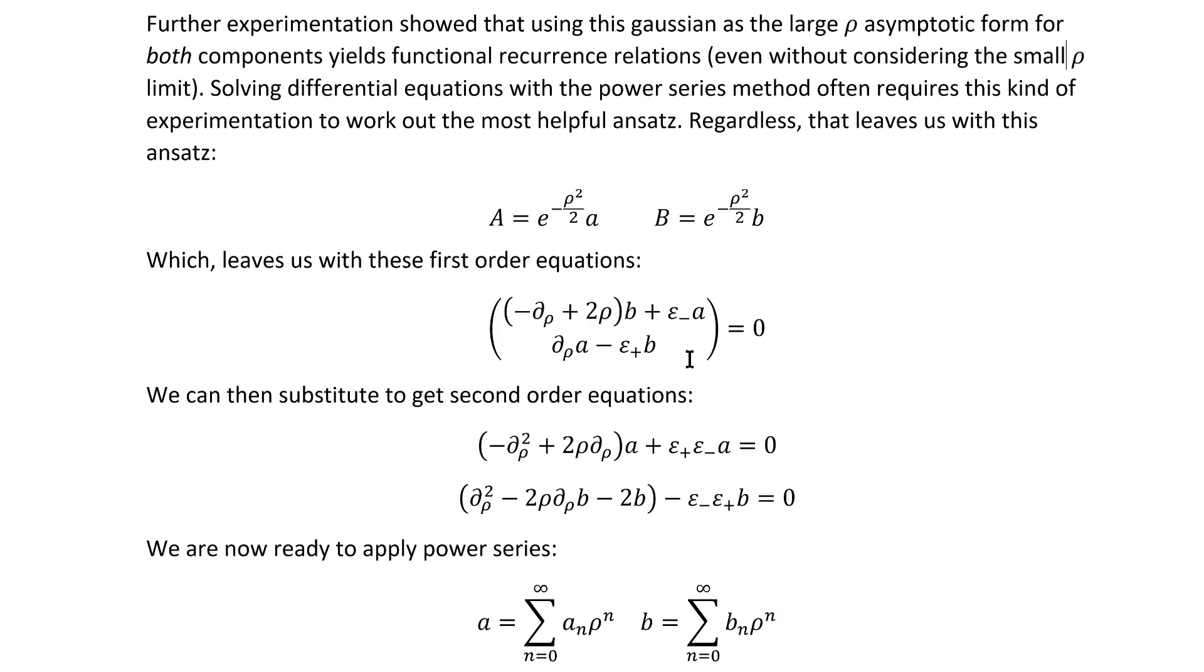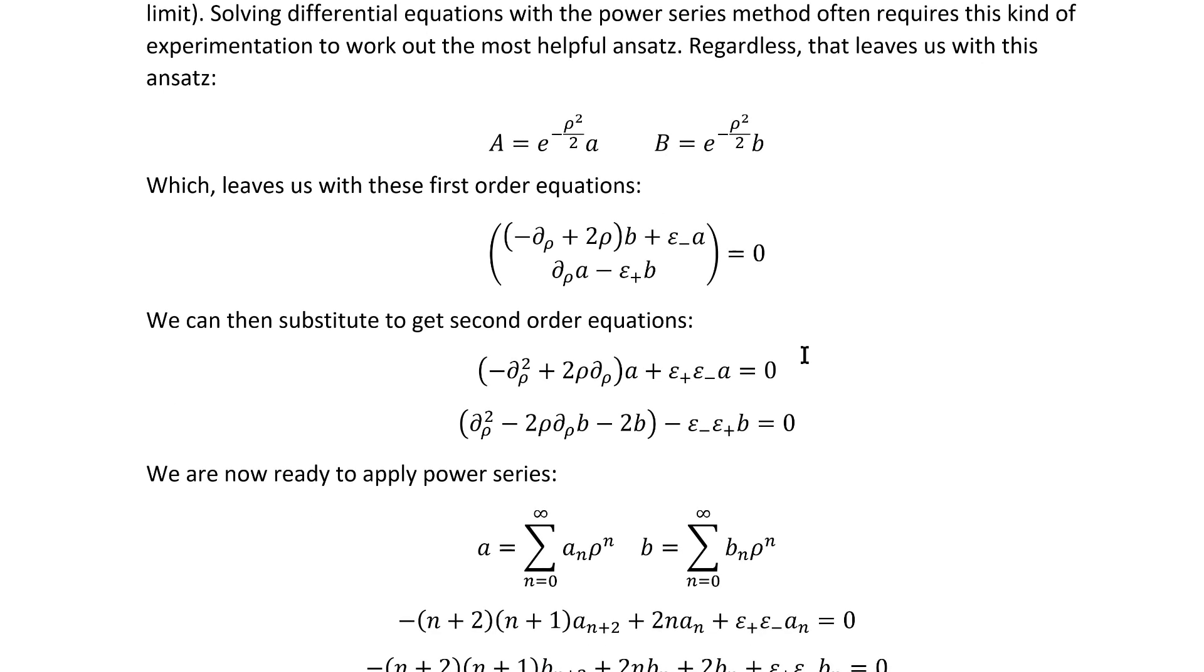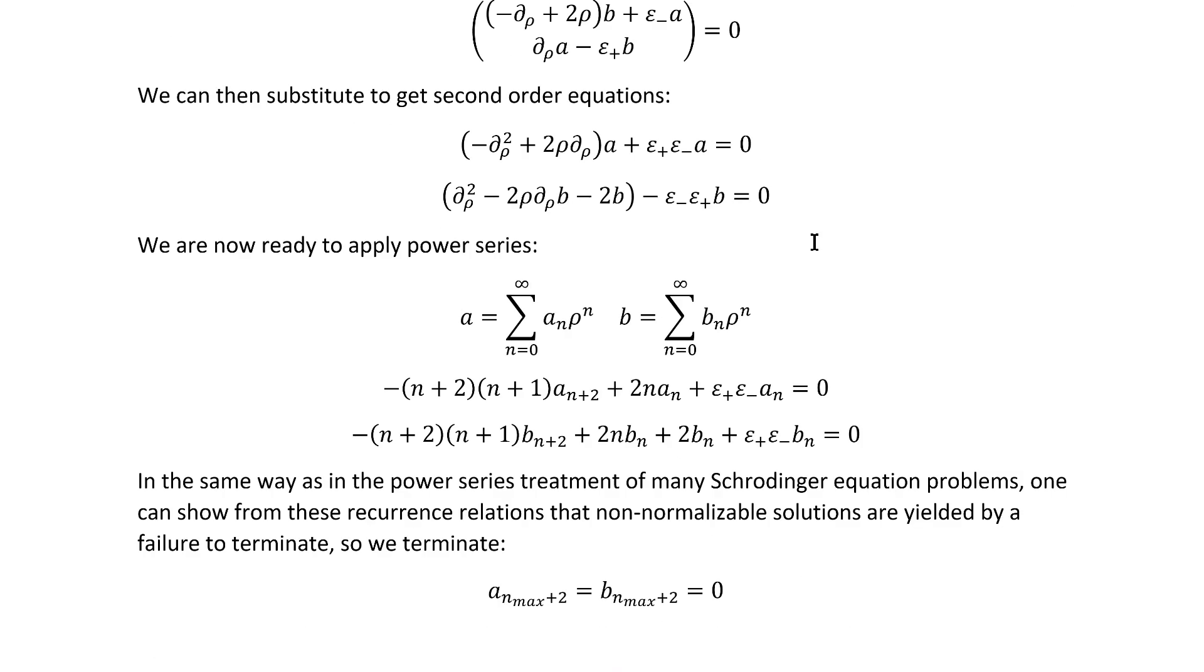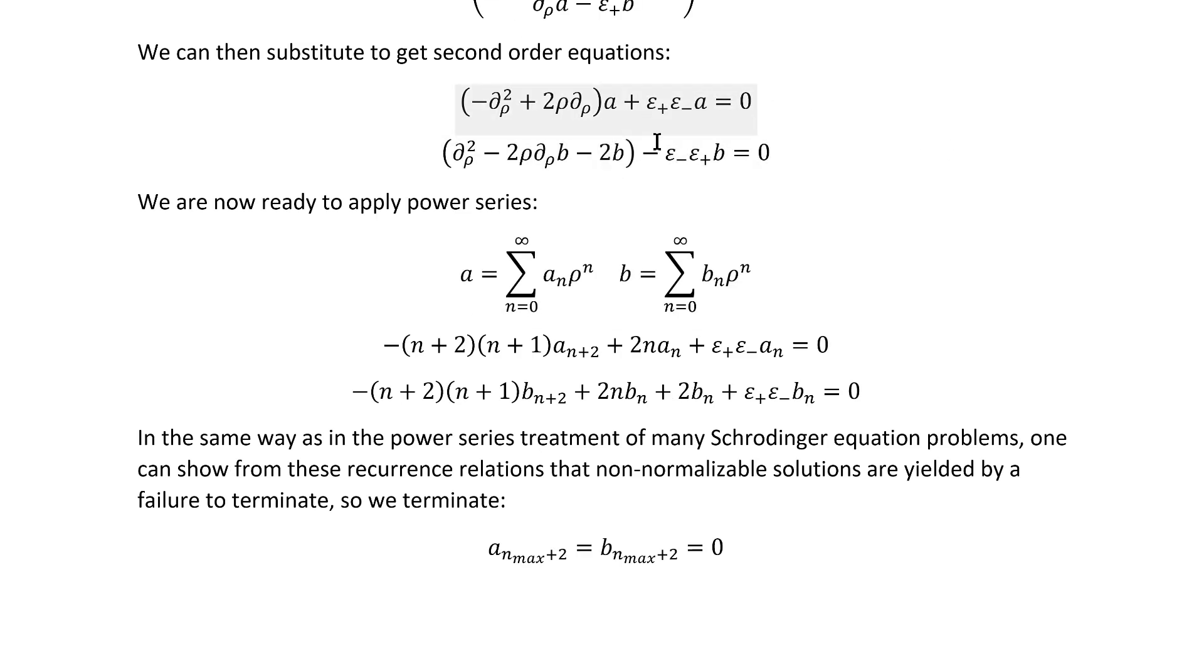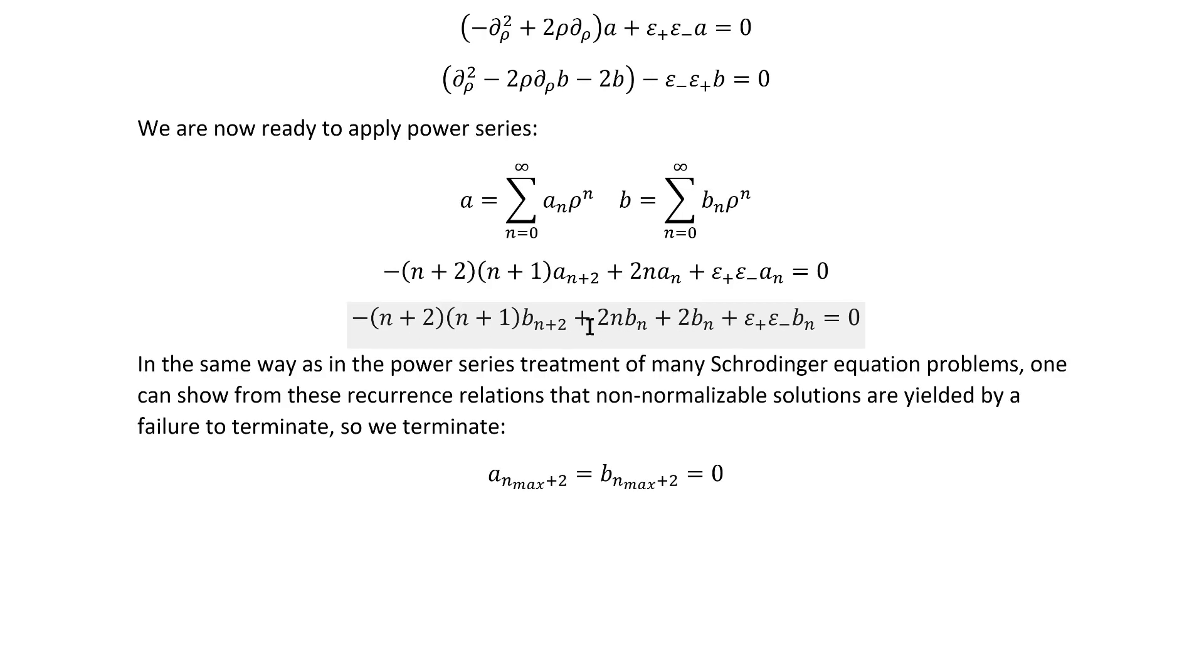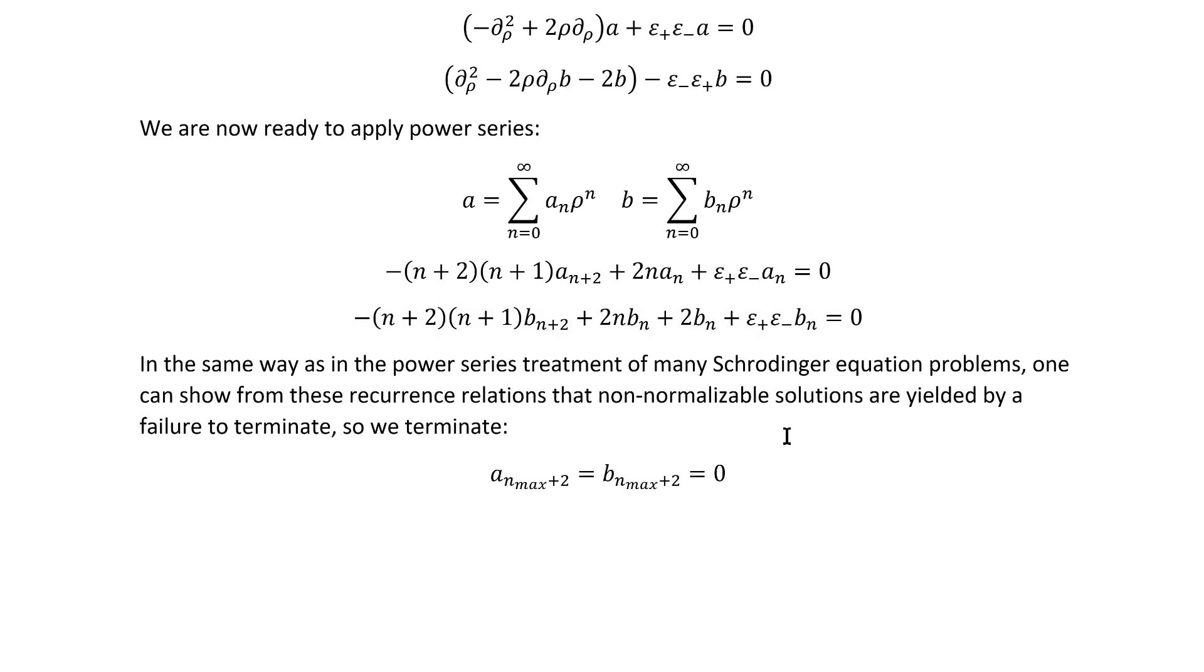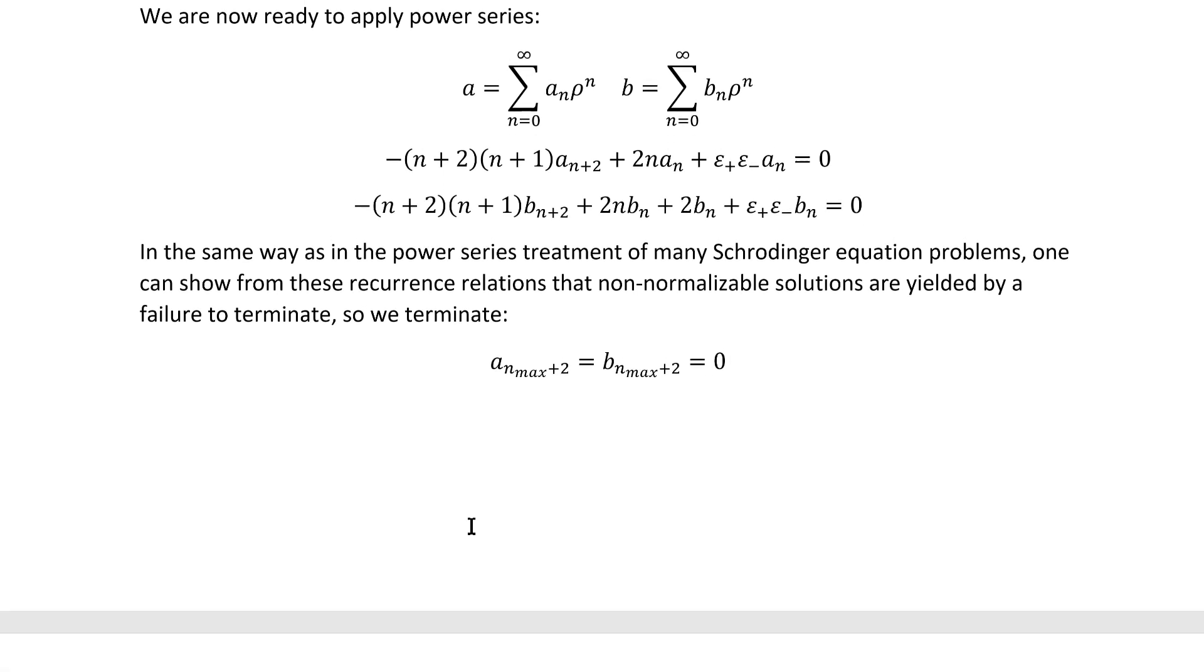Regardless, that leaves us with this ansatz and this pair of first-order equations, and ultimately, via substitution, this pair of second-order equations. And with these final second-order equations in front of us, we're ready to apply the power series. Inserting these into our equations and doing the normal incrementation of the index that we need to do in order to be able to factor out the ρ to the n factor and take the coefficients equal to zero gets us these recurrence relations in the same way as in the power series treatment in my Schrodinger equation problems. It's pretty easy to show from these recurrence relations that non-normalizable solutions are yielded by a failure to terminate them, so we terminate.